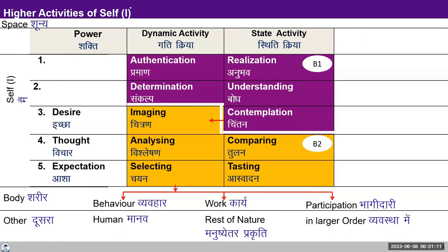This is just showing you the awakening to the B1 block so that it can guide the lower activities. Here you can see if a person has awakened to realization, understanding and contemplation — the B1 block — then that becomes the guide. You can see that small red arrow leading to the desire and imaging. That becomes the guide that sets all my desires right. Now my desires are for living with this relationship, with this harmony, with the coexistence. All my desires get set for that, and accordingly my thoughts and my expectations come in line with that. This is what this chart is depicting.